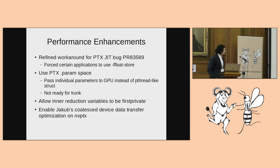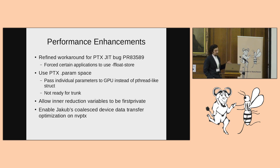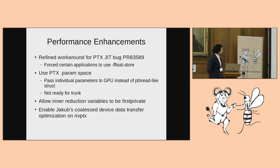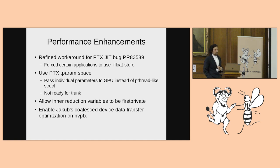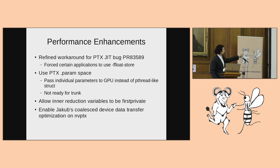There are four performance enhancements that benefited this program — three that I worked on and one from Jacob. The first was an annoying PTX JIT bug. We have a workaround for it in GCC. NVIDIA is generally pretty responsive at resolving their bugs, but it takes a couple of months, so we try to work around issues when we can. The original workaround had another bug that forced the code to only work with float stores, which really hurt DGEMM.